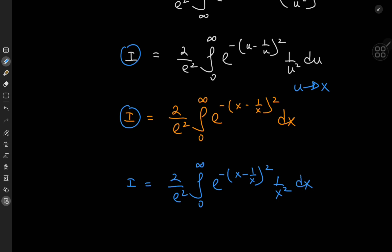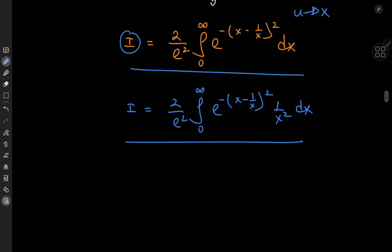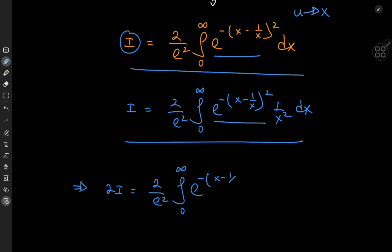Now we have the structure in blue and the structure in orange both representing the same target integral i. Let's just add them up and see what happens. Normally when we add up different versions of the same integral, we always get something nice, and that's the case here as well. So we have 2 times i equal to the common factor of 2 by e squared, and by linearity of the integration operator, we have the integral from 0 to infinity. We can factor out the common term of e to the negative x minus 1 by x squared, times 1 plus 1 by x squared, dx.